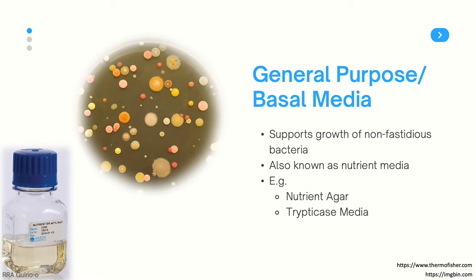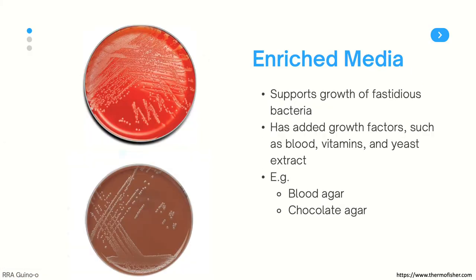We also have trypticase media or trypticase broth, that's the one you can see on the lower left corner. Although some bacteria only need a minimal amount of nutrients to grow, others, which we call fastidious bacteria, need additional factors. And this is where the next media come into play. They are called enriched media. This media has added growth factors, such as blood, vitamins, and yeast extract, to name a few.